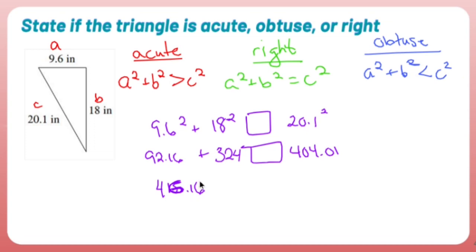Yeah, that would make sense. And 416.16 is greater than 404.01. So since the sum of the two smaller sides was greater than the longest side squared, I have an acute triangle, which means all three angles are less than 90 degrees.